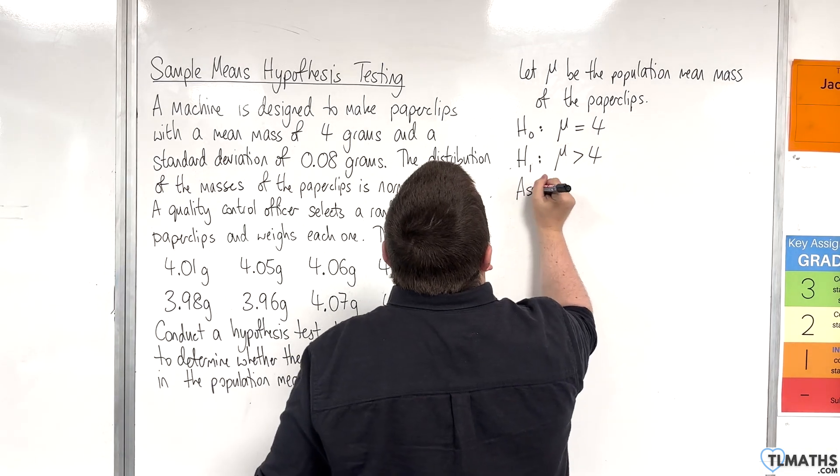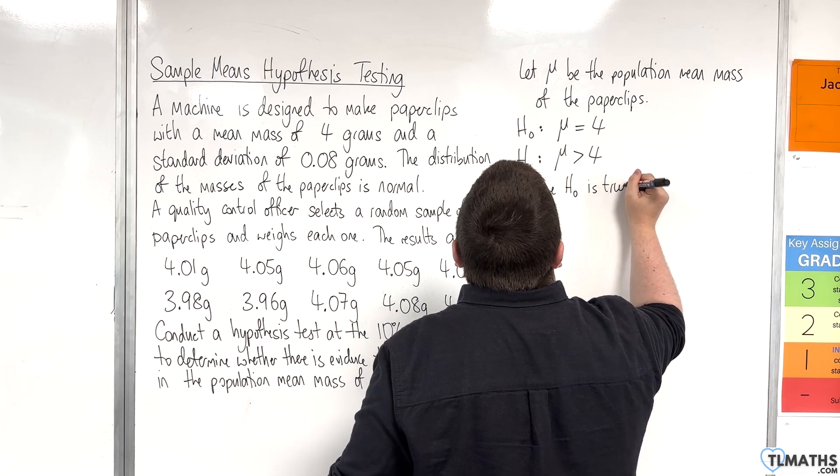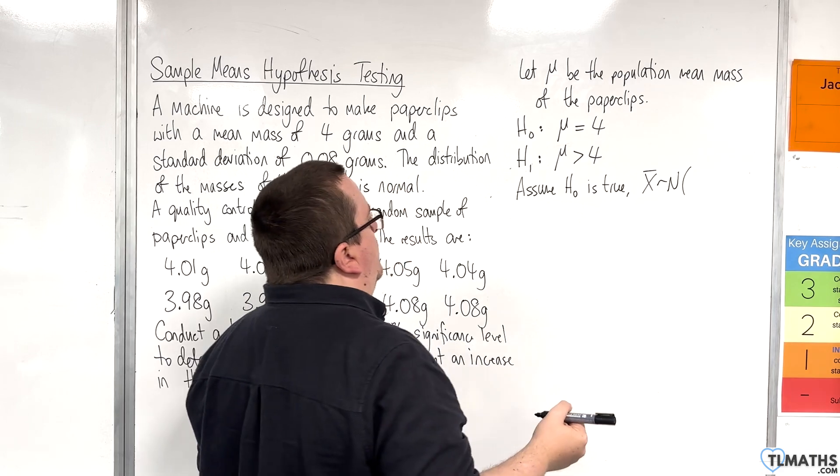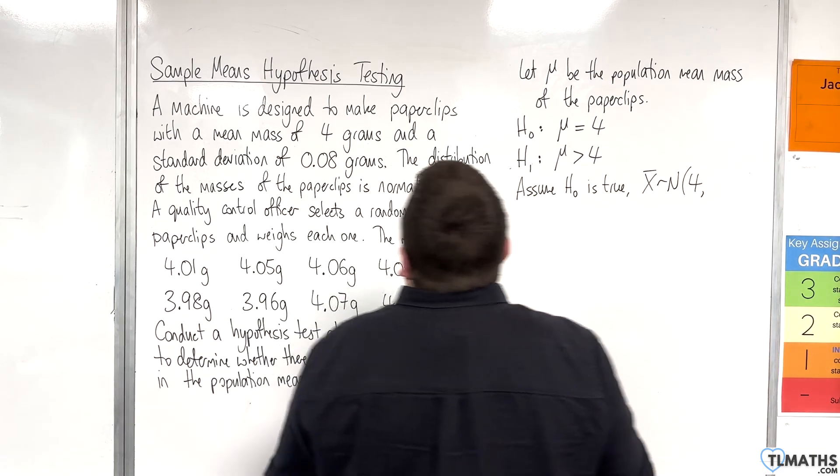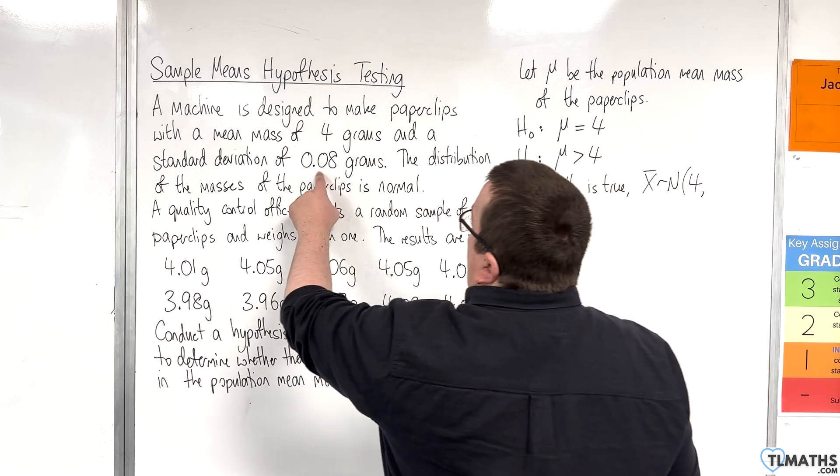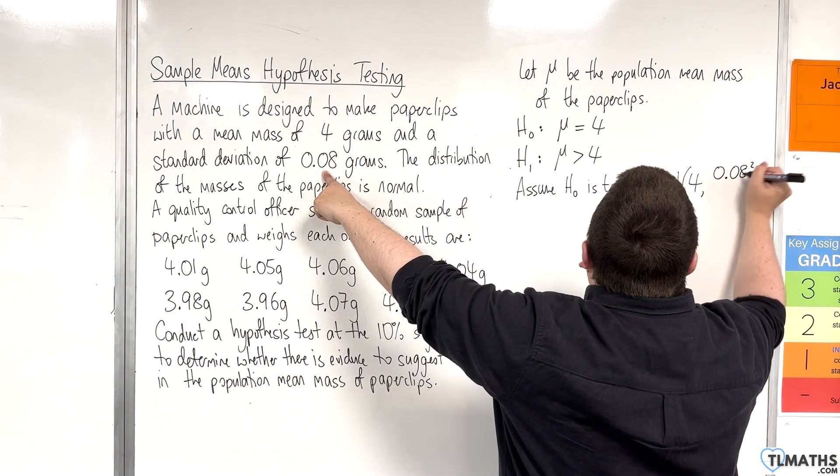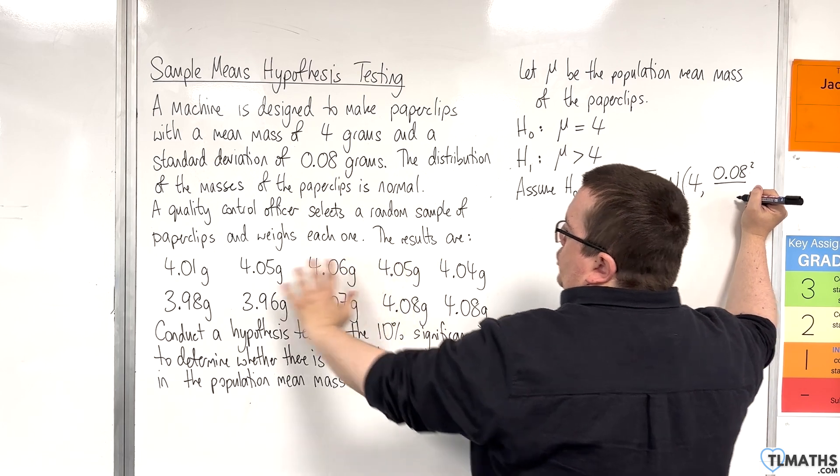We will assume H₀ is true and set up a normal distribution for the sample means, which has a mean of 4 and a variance of 0.08² divided by the sample size, which is 10.